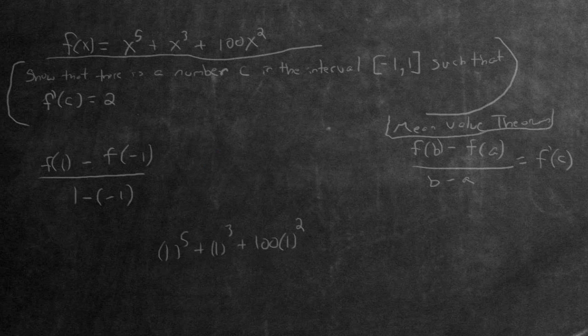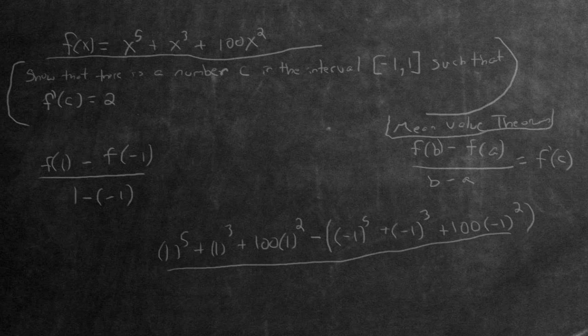Then subtract f(-1) = (-1)^5 + (-1)^3 + 100, divided by 1 - (-1), which is 2.